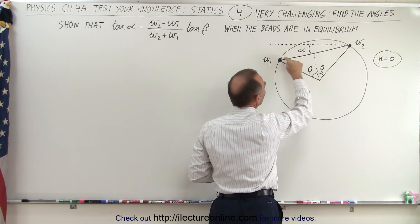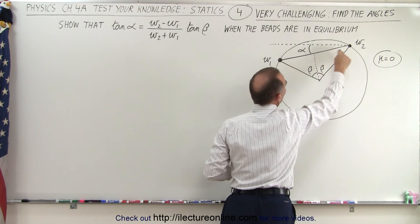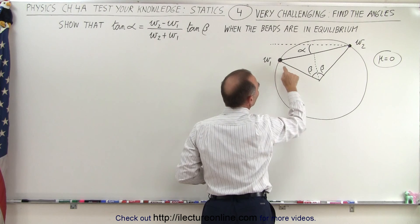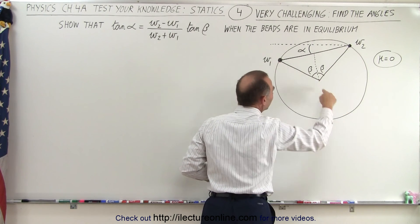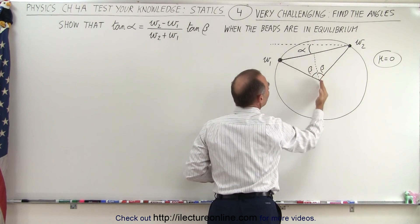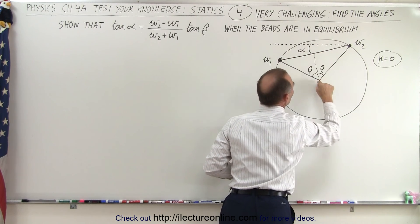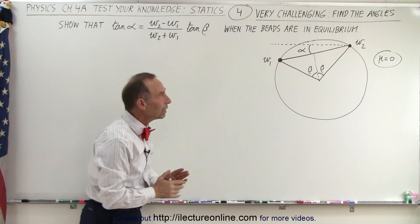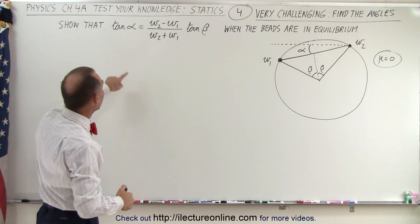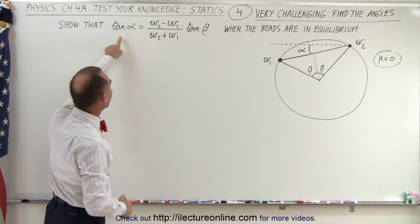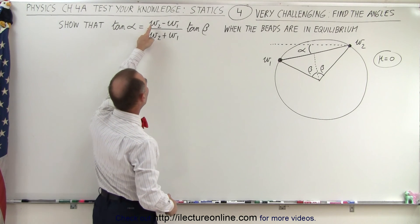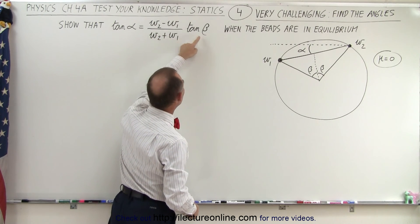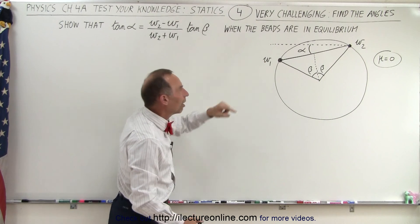The angle alpha is the angle between the string that connects the two beads and the horizontal. The angle beta is the angle from the center of the ring to the bead and down to the perpendicular from that line to the center. So we have beta plus beta — that would be an angle of two beta all the way between those two. So we need to find the relationship between the two. Here's the equation we're looking for: the tangent of alpha is equal to W2 minus W1 divided by W2 plus W1 times the tangent of beta. These are the weights of the two beads.